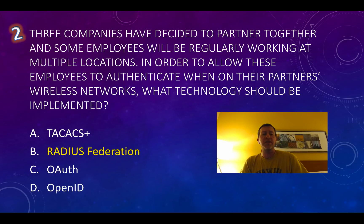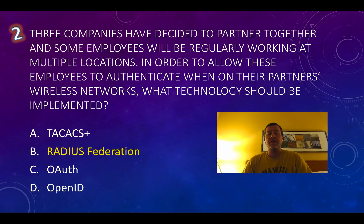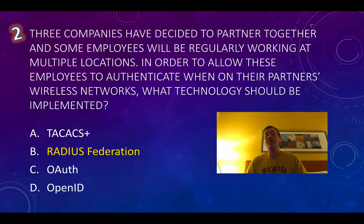Three companies have decided to partner together, and employees will be regularly working at multiple locations. In order to allow these employees to authenticate when on their partner's wireless networks, what technology should be implemented? The answer is RADIUS Federation. With RADIUS, we're basically validating usernames and passwords against some sort of authentication service, like AAA. With Federation, we can actually authenticate against multiple different places — federated identity management. RADIUS Federation takes that further, allowing validation from multiple locations against a centralized provider.